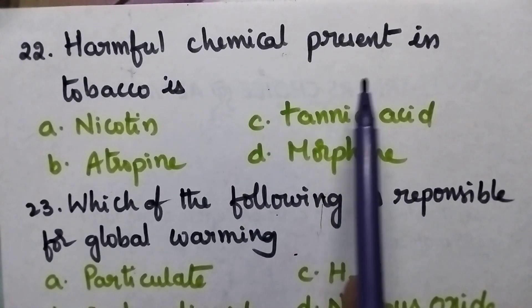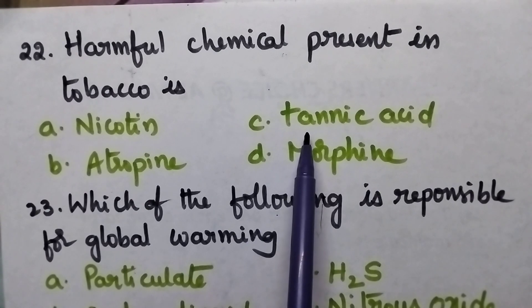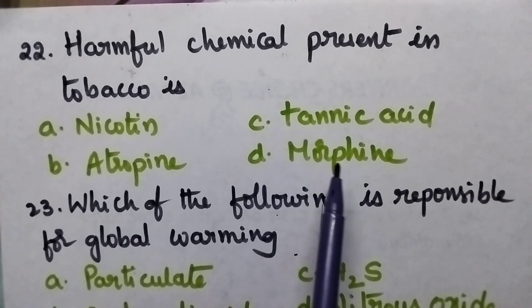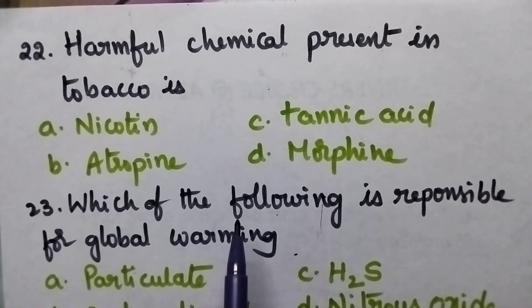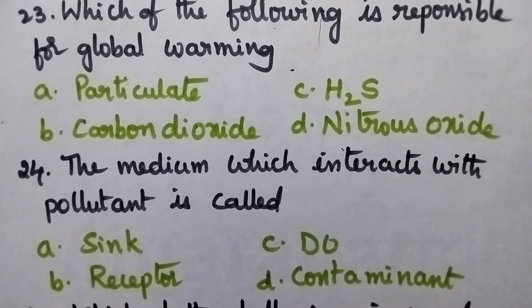Harmful chemical present in tobacco is A: Nicotine, B: Atropine, C: Tannic acid, D: Morphine.